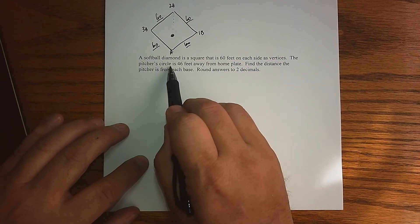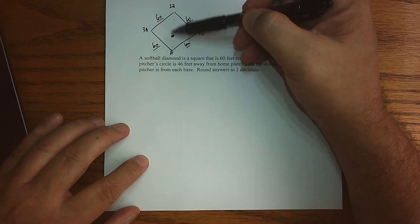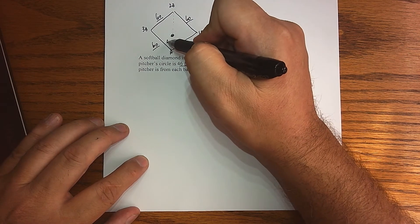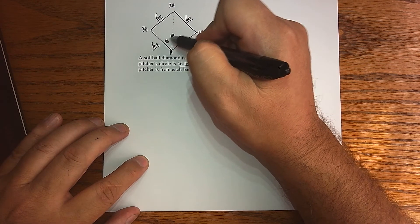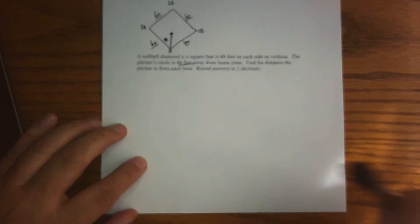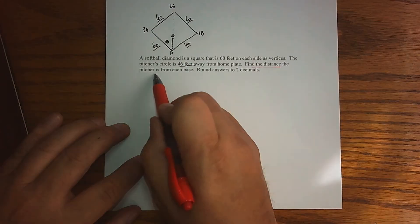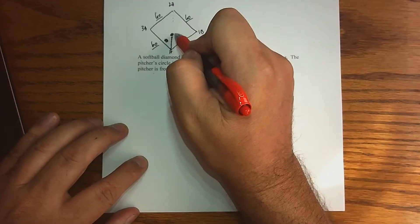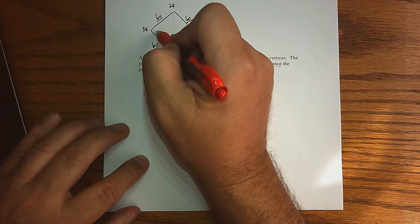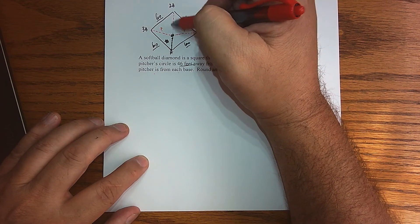There's the situation: 60 feet per base path. We know that the pitcher's circle, which lies on the straight diagonal from home plate to second base, its distance is known to be 46 feet from home plate. What they want us to do is find the distances the pitcher is from each base. What's this distance from first base, what's this distance to third base, and then what's this distance from second base to third base?